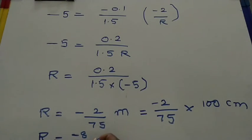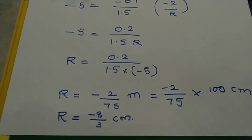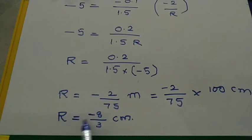Therefore R = -2/75 meters. Converting to centimeters: R = (-2/75) × 100 = -8/3 centimeters. So R equals -8/3 centimeters. Whenever a concave lens is immersed in a liquid to find the radius of curvature, the radius of curvature is -8/3 centimeters. That is how we solve this numerical. Thank you.